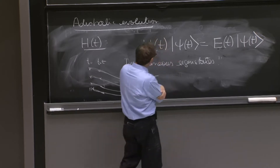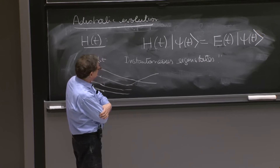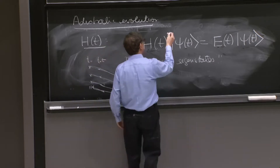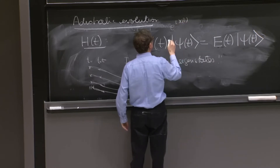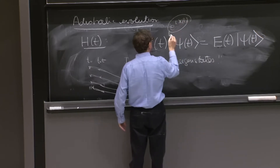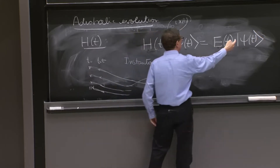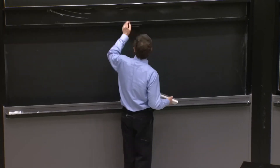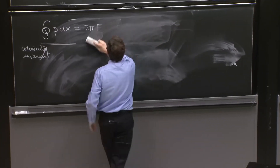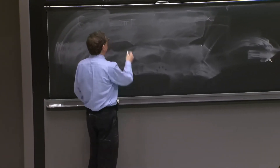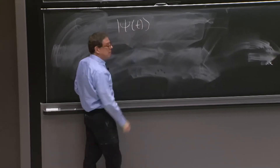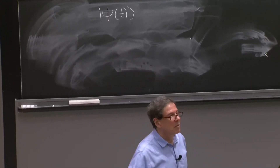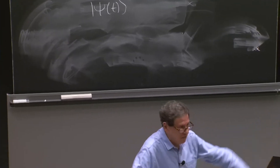Moreover, these states are not all that unique. I could multiply these states by phases e^{iχ(t)}, a time-dependent phase, and the Hamiltonian wouldn't care — it would cancel. So these states are just not very unique. The more important thing: do these ψ(t)'s solve the Schrödinger equation? Are these the solutions of the Schrödinger equation? We found the instantaneous eigenstates — so are these solutions of the Schrödinger equation?